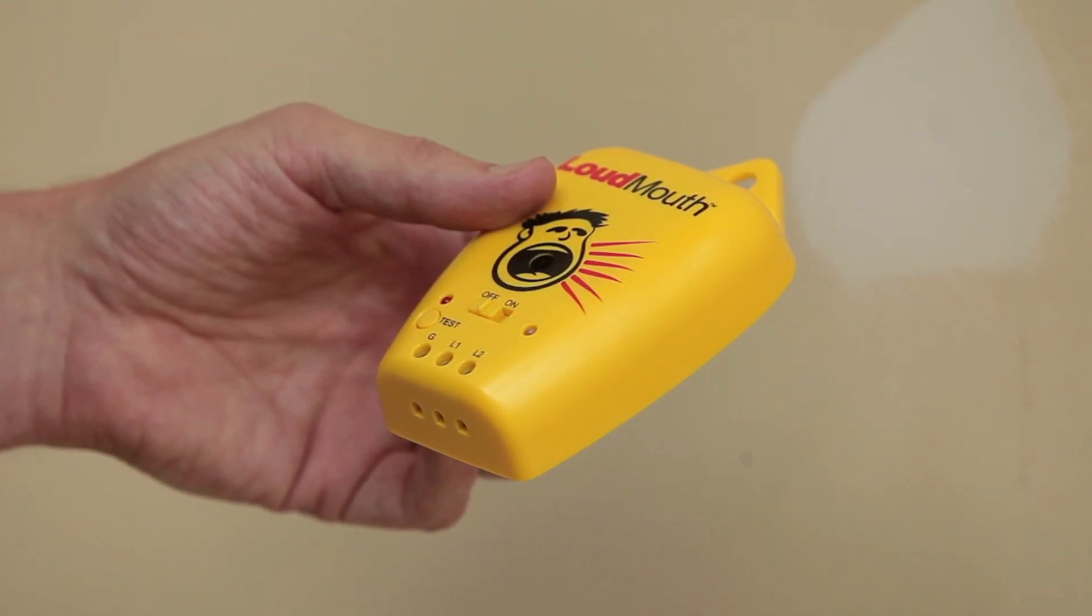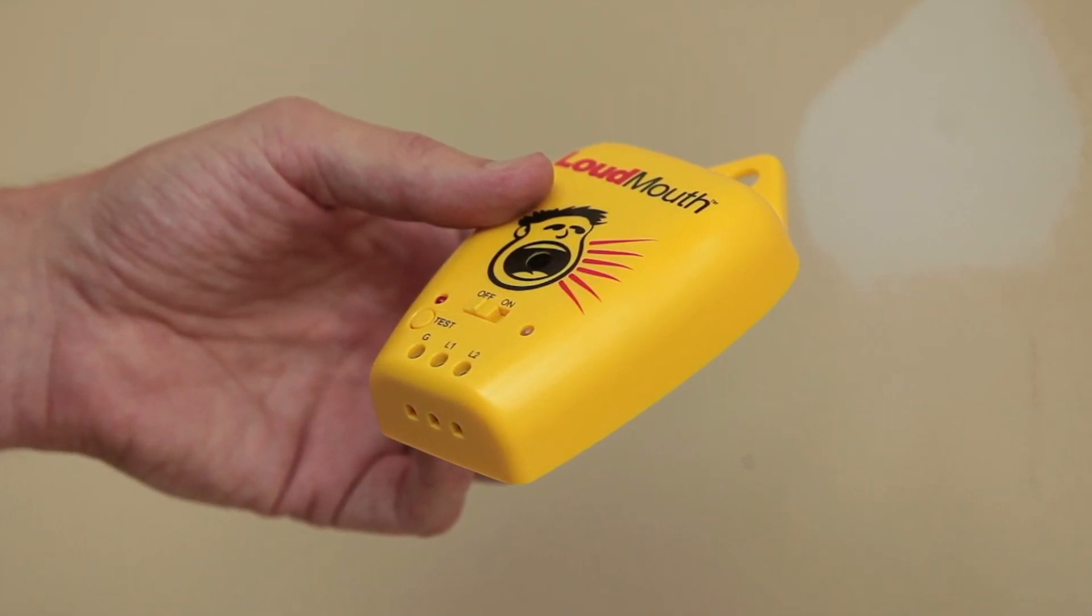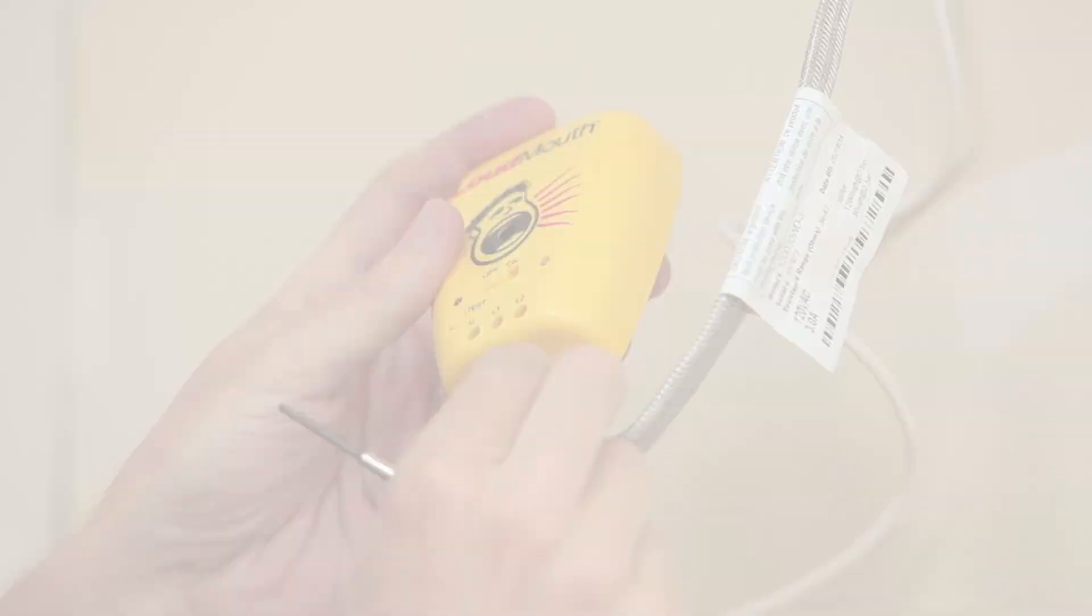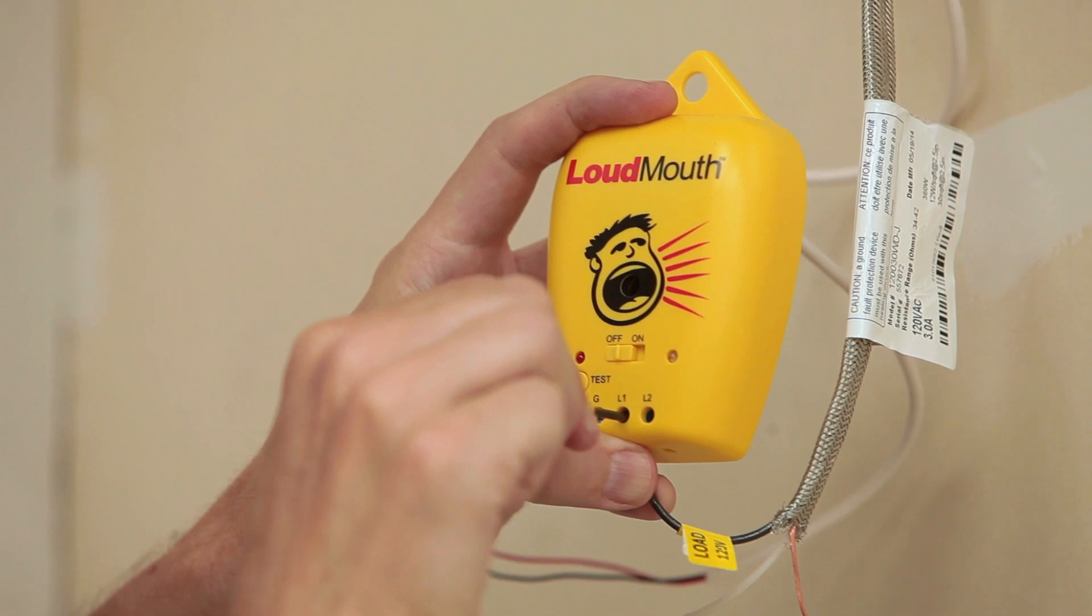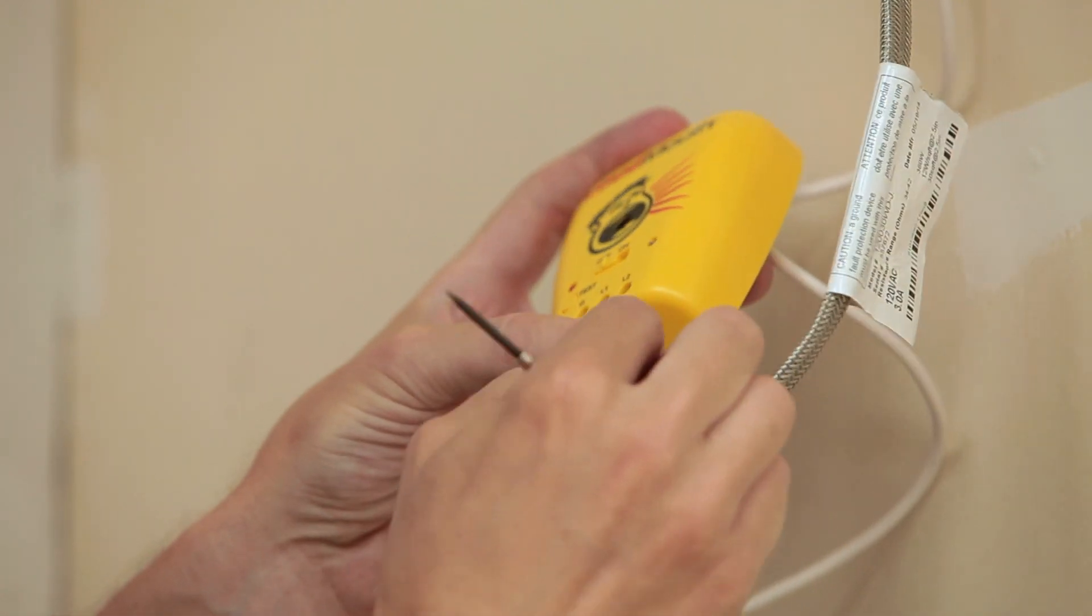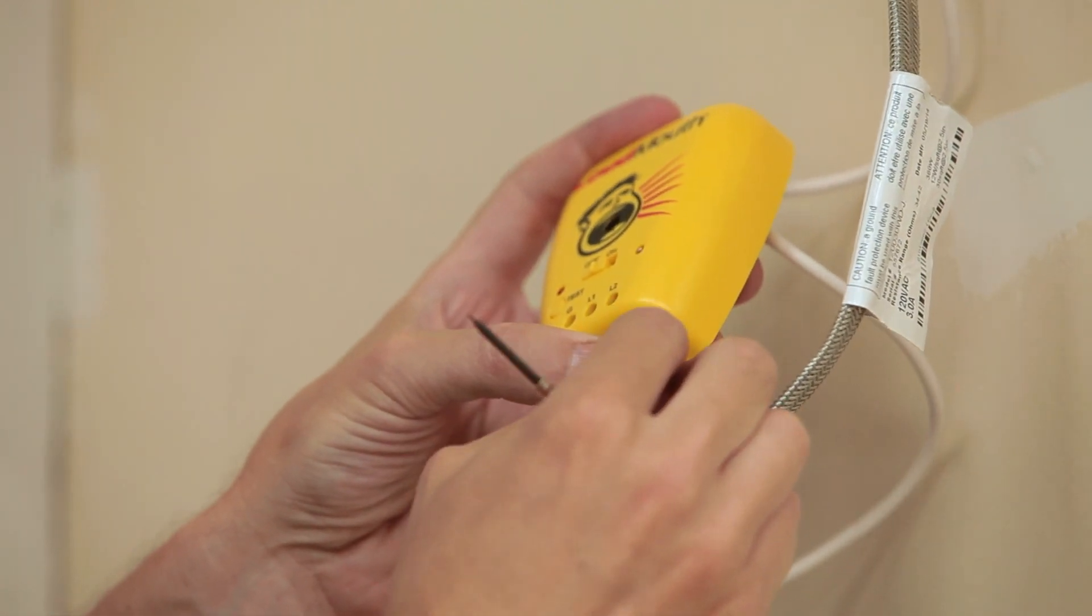If you purchased a loudmouth sensor with your system, now is the time to connect it. If the heating wire is cut or damaged during installation, the loudmouth will sound an audible alarm. Instructions for this alarm are available in the loudmouth sensor video.